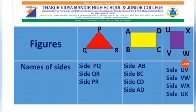Same for the square: side UV, side VW, side WX, and side UX. Remember, students — while writing the names of the sides, the word 'side' is compulsory to write before the letters. That is SIDE — side PQ.